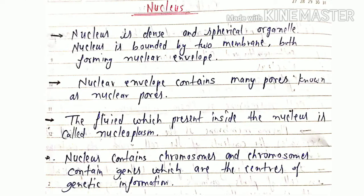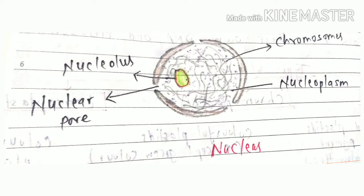The next cell organelle is nucleus. If we talk about the nucleus, the nucleus is dense and spherical organelle. Nucleus is bounded by two membranes both forming nuclear membrane. You can see in this diagram nuclear envelope contain many pores. These pores called as nuclear pores.